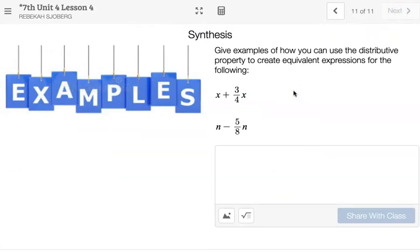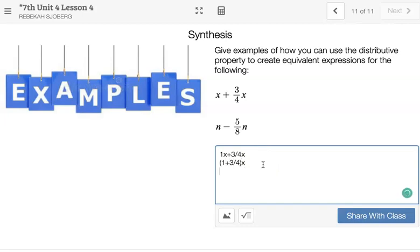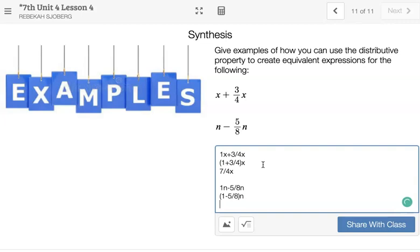So in a synthesis, you want to just notice when we have an X plus 3 fourths X, and we're trying to use distributive property to simplify it, we can change that to 1 X plus 3 fourths X. And then we can notice in distributive property says that we can take out that X, and we can have the 1 plus 3 fourths combine that together multiplied by X to give us 1 and 3 fourths is just 7 fourths times X. Similar, in the bottom one, we can change that to 1 N minus 5 eighths N. Then we can write that as 1 minus 5 eighths times N, and 1 minus 5 eighths is 3 eighths, so we have 3 eighths N. So we can simplify by changing this naked number that doesn't have a coefficient, put a 1 in front of it, and then combine those coefficients and multiply it by the variable.